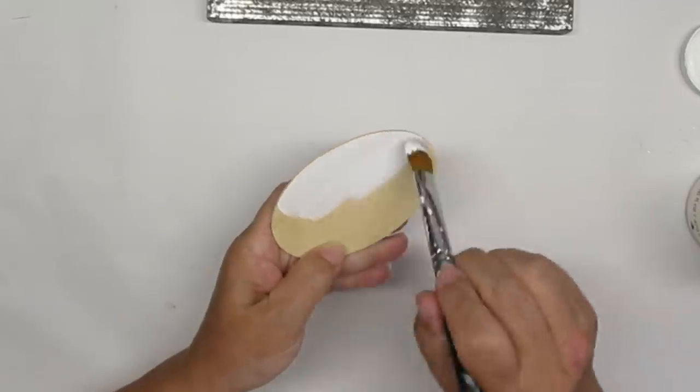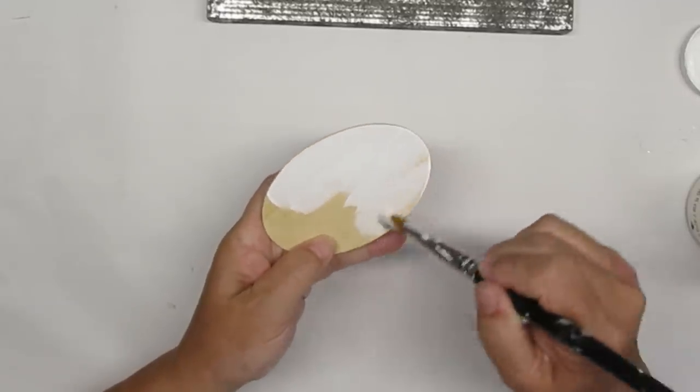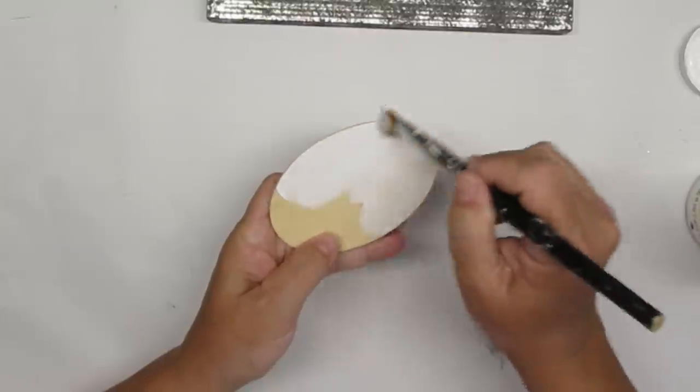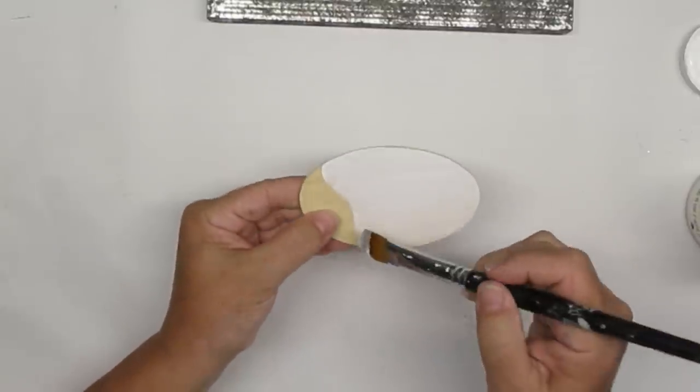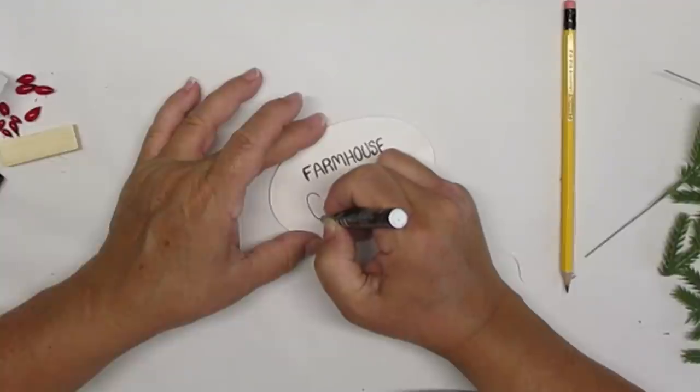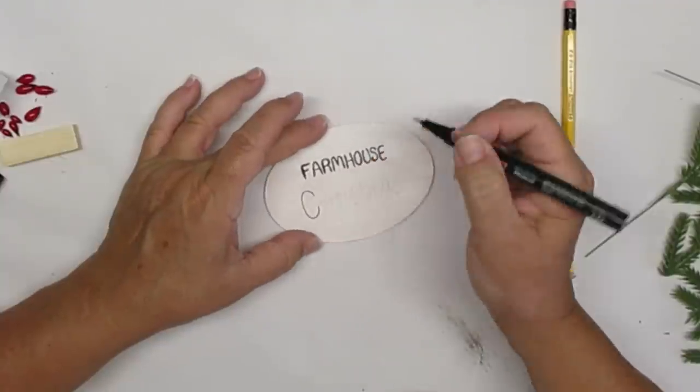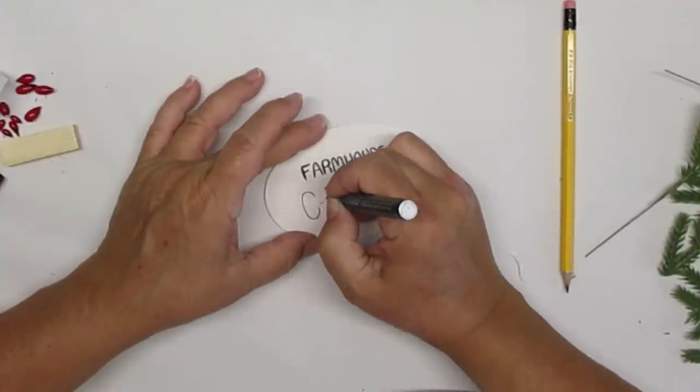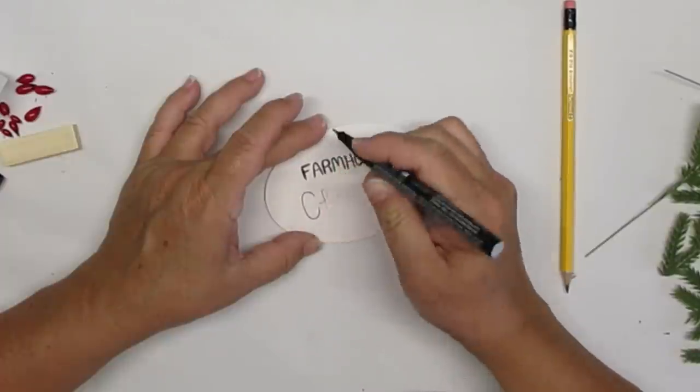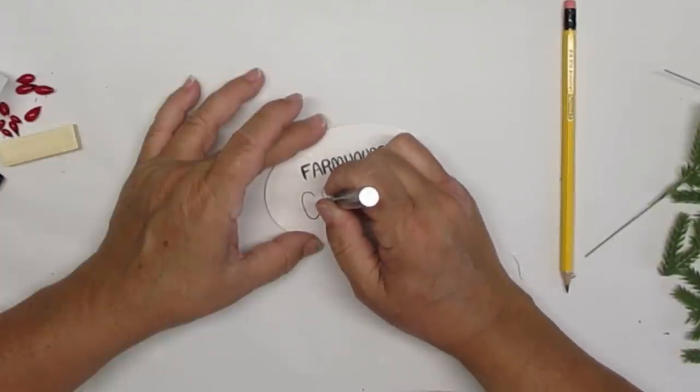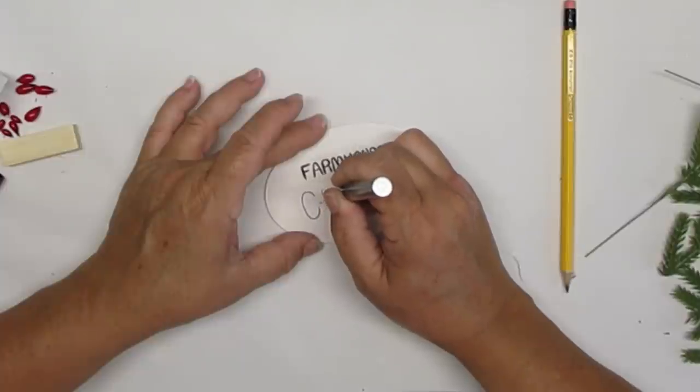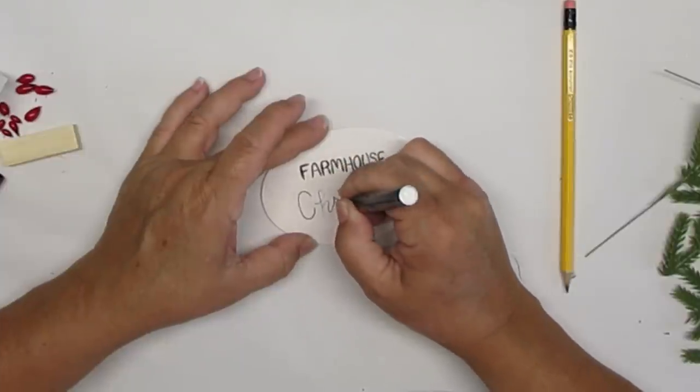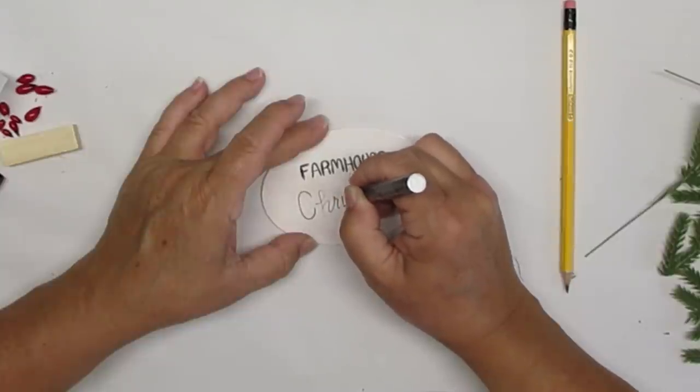This little oval round came from the Dollar Tree and I'm just going to give it one good coat of white chalk paint including the sides. Once the paint was dry I went with my pencil and wrote out the words Farmhouse Christmas in two different fonts and this is just a freehand font. I've done this enough times that I think I know how I want things to look so I just go ahead and go for it.